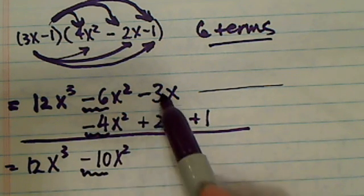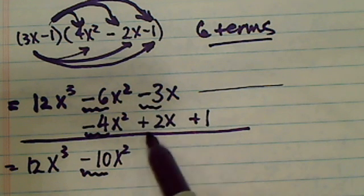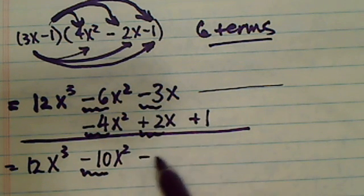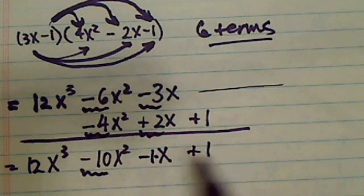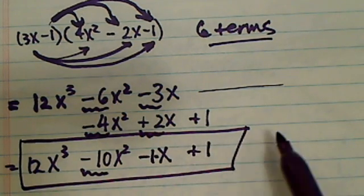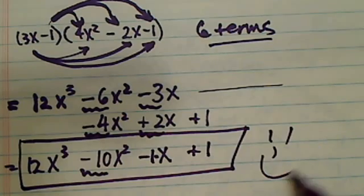And then over here you owe 3 and you earned 2 dollars back, so now you only owe 1 dollar. This is minus 1, and then plus 1. So here's your answer. All right, that wasn't too bad, have a confident day.